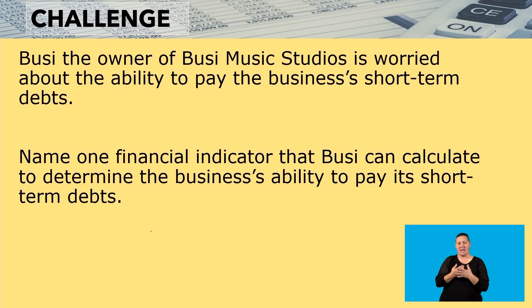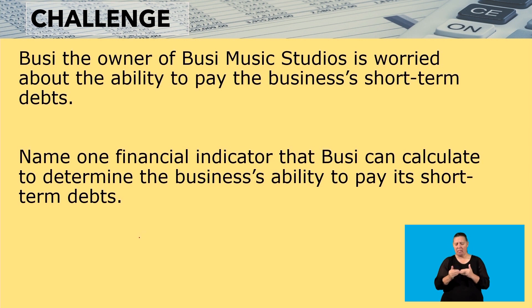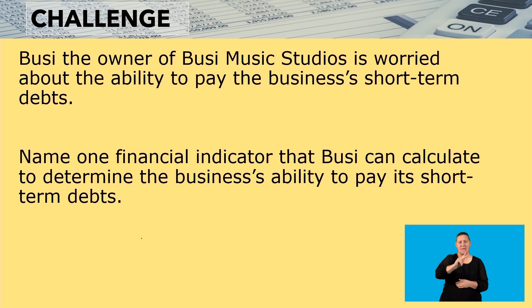I have a challenge question for you, and it reads: BUSI, the owner of BUSI Music Studios, is worried about the ability to pay short-term debts. Name one financial indicator that BUSI can calculate to determine the business's ability to pay its short-term debts.